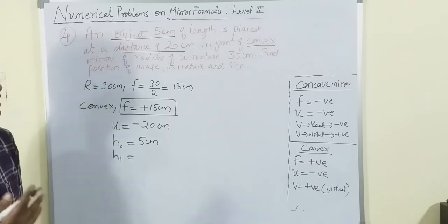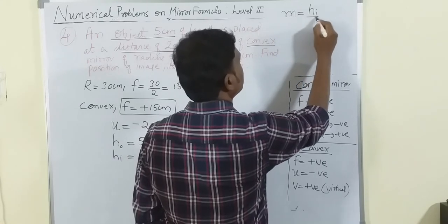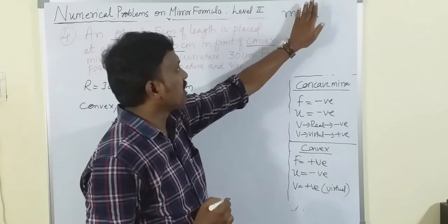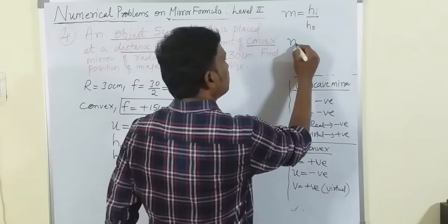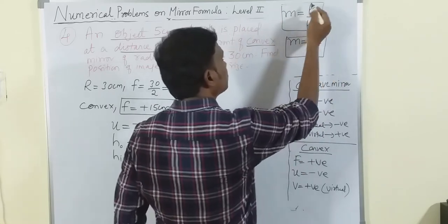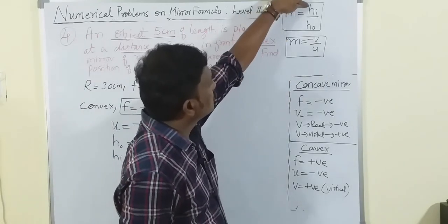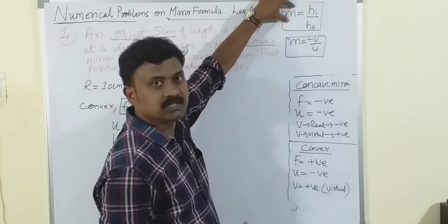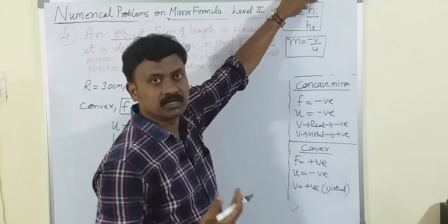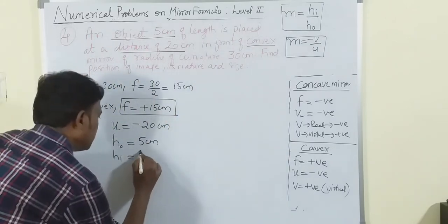They are also asking for the height of the image. Remember: m = height of image / height of object (ratio of size of image to size of object). When height values are given, you find magnification first, then multiply by the object's height to get the image height.